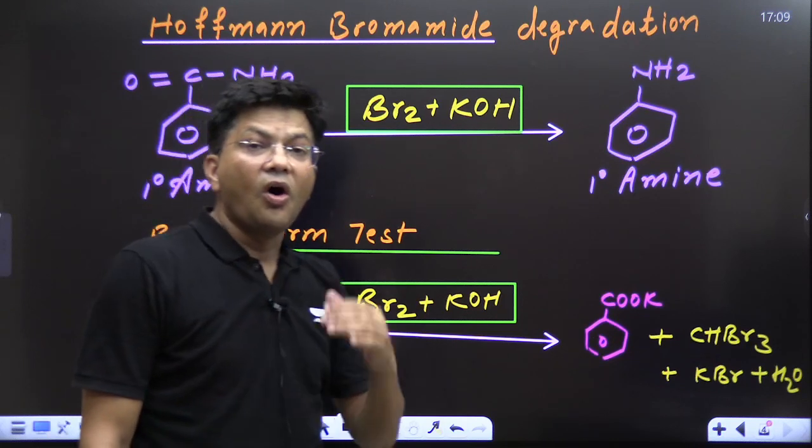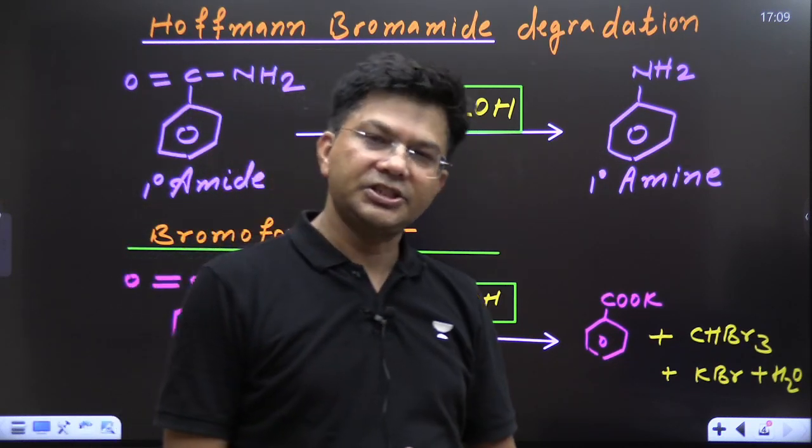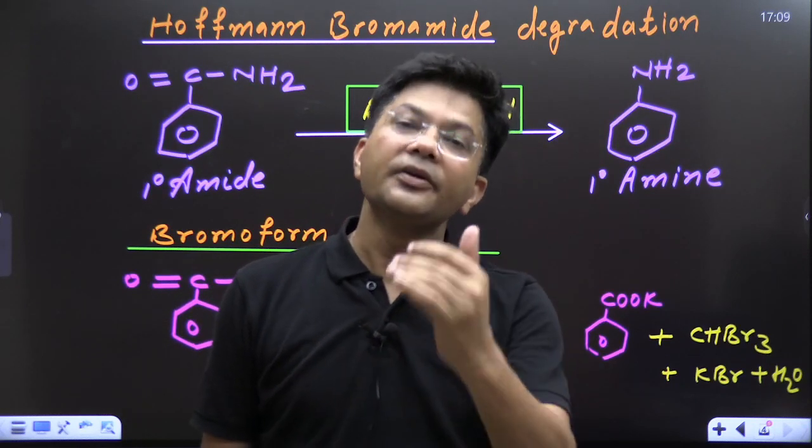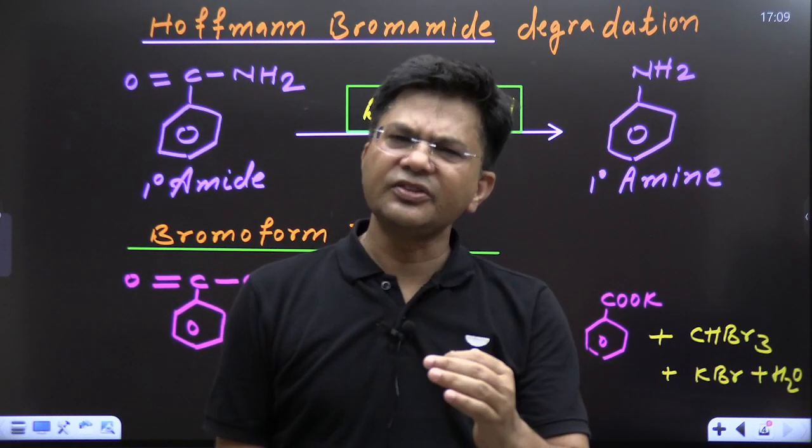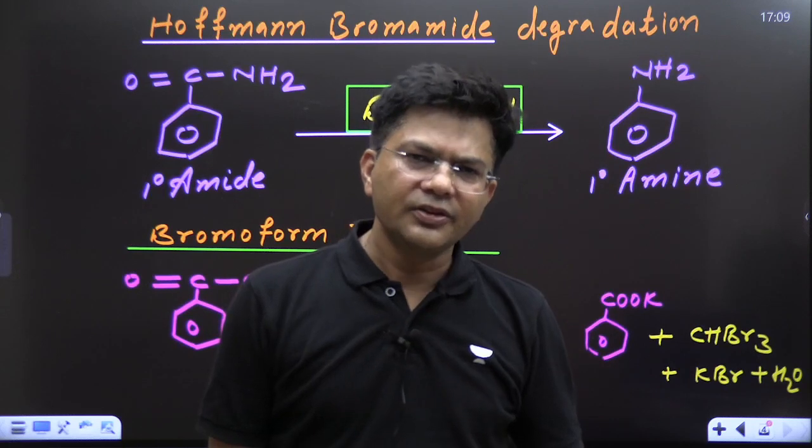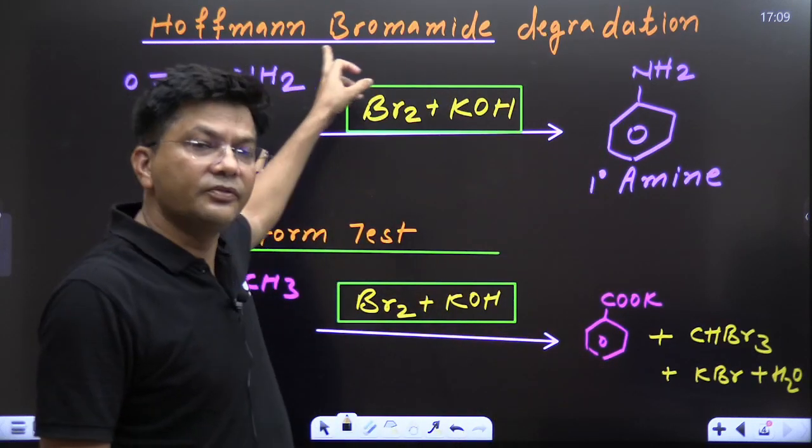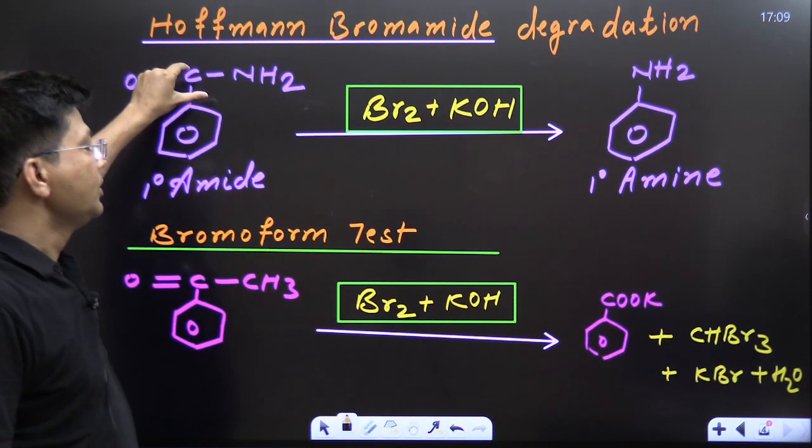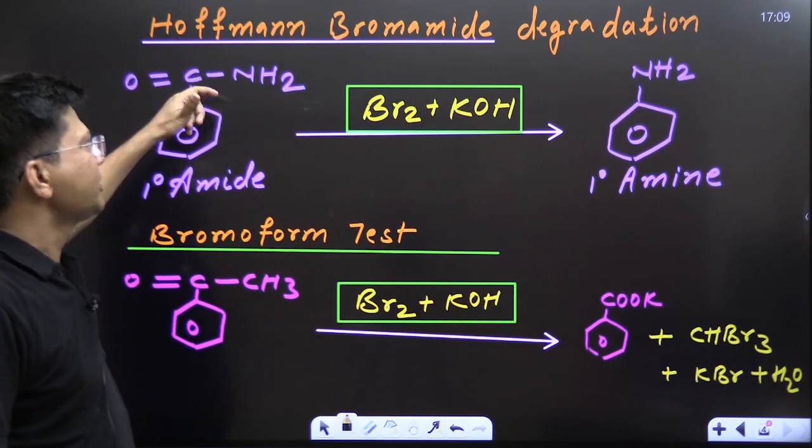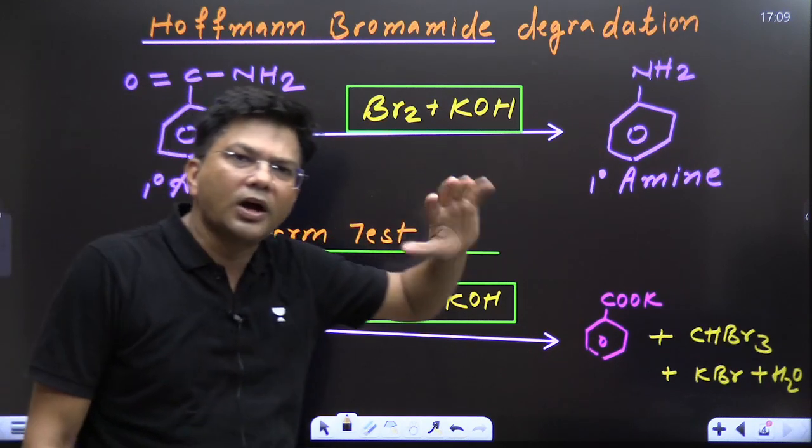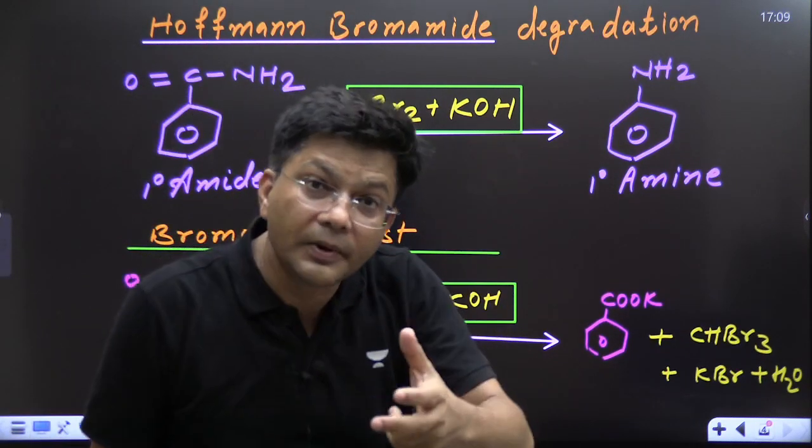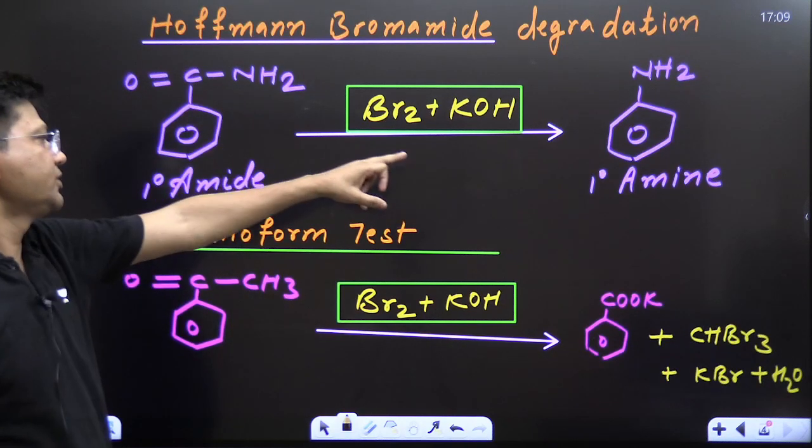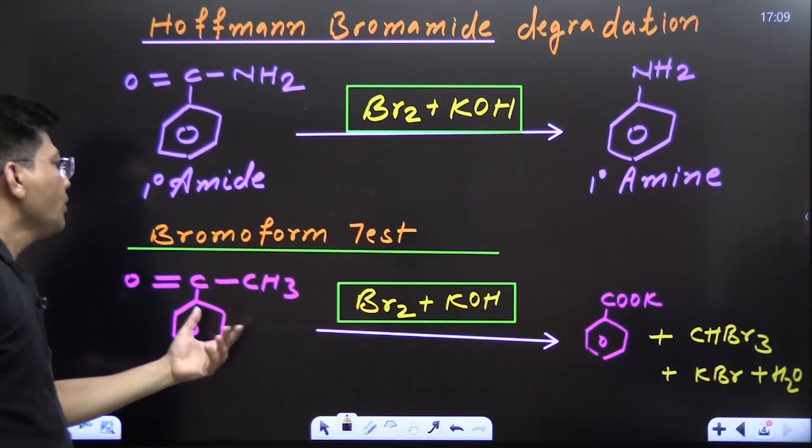This is known as Hoffmann-Bromamide degradation reaction or Hoffmann-Bromamide rearrangement or Hoffmann-Bromamide rearrangement reaction. This is shortening of the chain. In this reaction, one degree amide converts into one degree amine. There is loss of carbonyl group. So, this test, this is not the test actually because no color, no fume is there. This is a simple reaction. So, Hoffmann-Bromamide degradation, one degree amide converts into one degree amine.